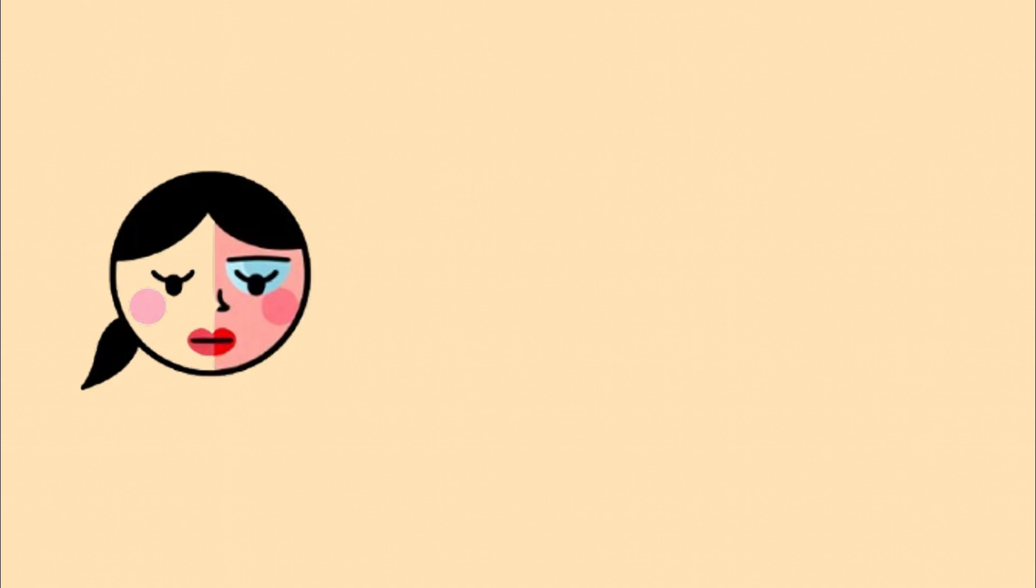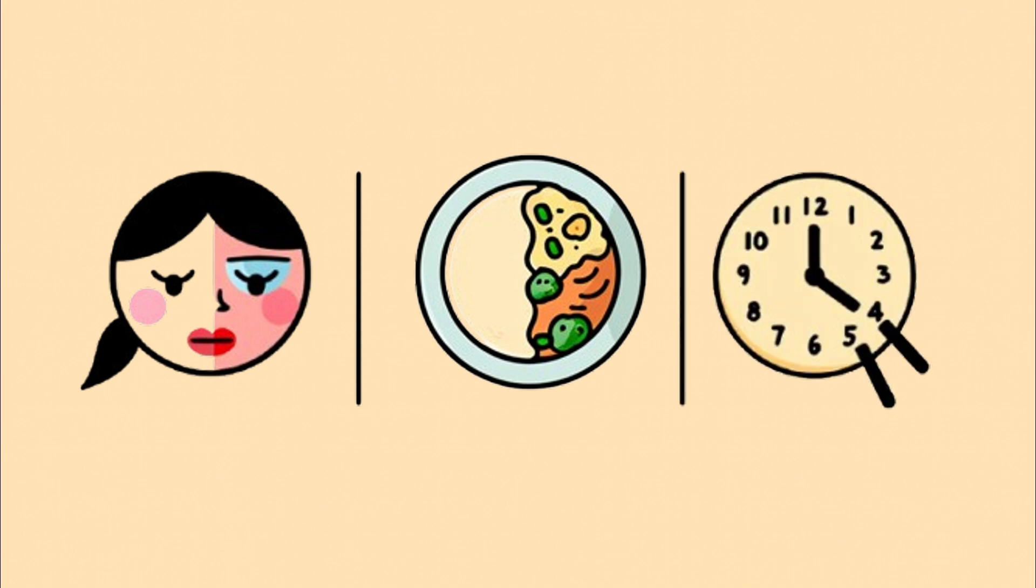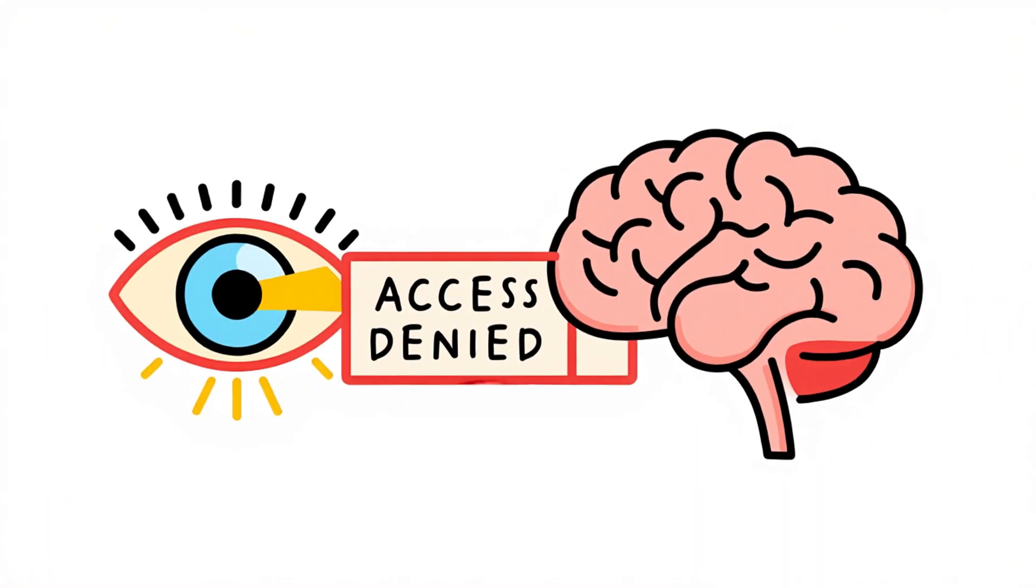Someone with this condition might put makeup on only the right side of their face and think they look flawless. They'll eat only the food on the right side of their plate, leaving the left side completely untouched. Not out of pickiness, but because it might as well be invisible. Ask them to draw a clock, and they'll cram all 12 numbers into the right half, leaving the left half as blank as a new email draft. And here's the kicker. Their left eye works just fine. There's no blindness. No vision loss. Their brain just refuses to process anything coming from the left.